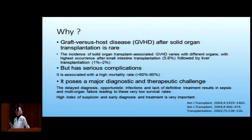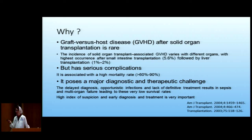Why am I talking about graft-versus-host disease after solid organ transplant? It's very rare. The incidence depends on what organ we're transplanting, but it ranges from 5.6% in small intestine to 1 to 2% in liver transplant and less in other organs. Mortality actually approaches more like 90%, because a lot of these people die of opportunistic infections from the pancytopenia that they get from the graft-versus-host disease.